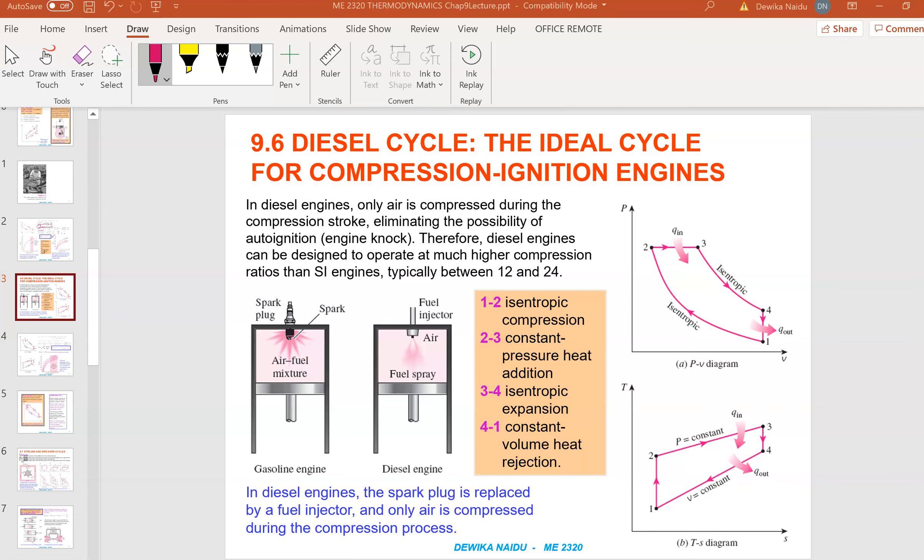Welcome back. We are looking at 9.6 which is diesel cycle, the ideal cycle for compression ignition engines.